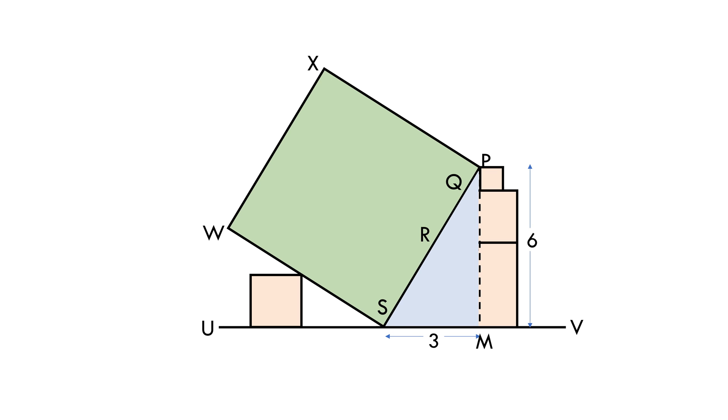Now using Pythagoras theorem in right angle triangle PMS, we get PS square equals to PM square plus SM square equals to 6 square plus 3 square.